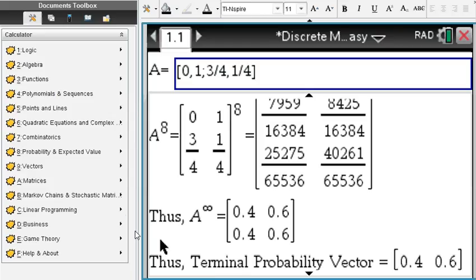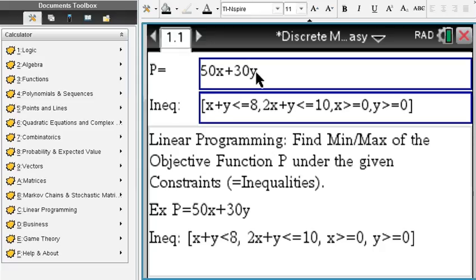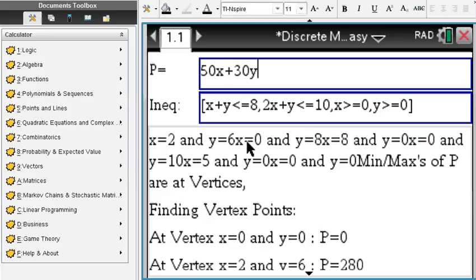Linear programming: find maximum. We have to enter our profit function on top and our conditions below, right? X plus Y less than or equal to 8. And if I scroll up, we do our usual analysis.